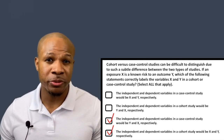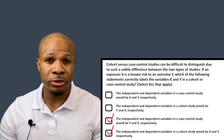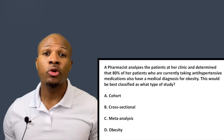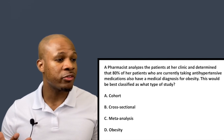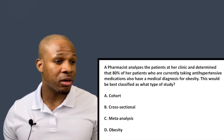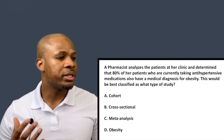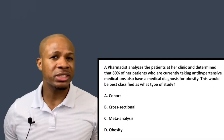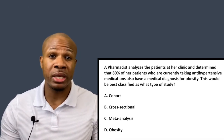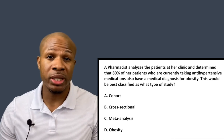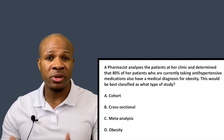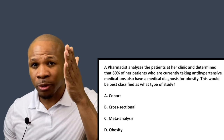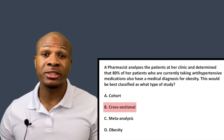So C and D are correct — let me know in the comments if that helps you understand the difference between these two study types. Question number three: a pharmacist analyzes patients at her clinic and determines that 80% of her patients taking antihypertensive medications also have a diagnosis for obesity. This doesn't really sound like a formal study — the pharmacist is just making an observation at a single point in time, with no flow of time occurring. That makes this a cross-sectional study, so the correct answer is B.